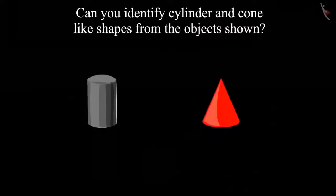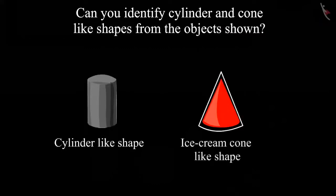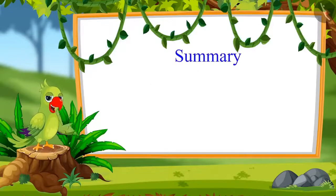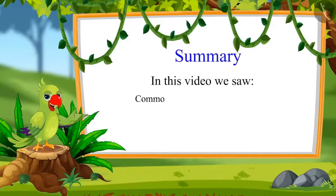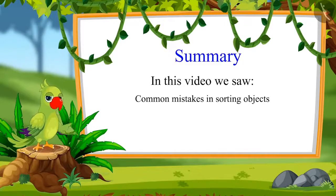Children, was your answer the same? As you have seen, the cylinder-like shape is round on both sides, but the cone-like shape is round on one side and pointed on the other side. So that was all for today. In this video, we saw the common mistakes in sorting objects. I hope you have understood this topic properly. Bye children!